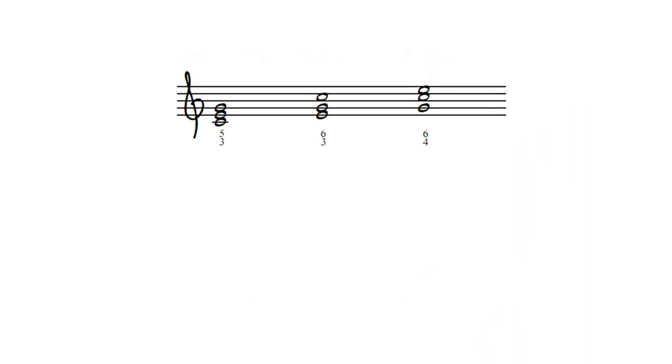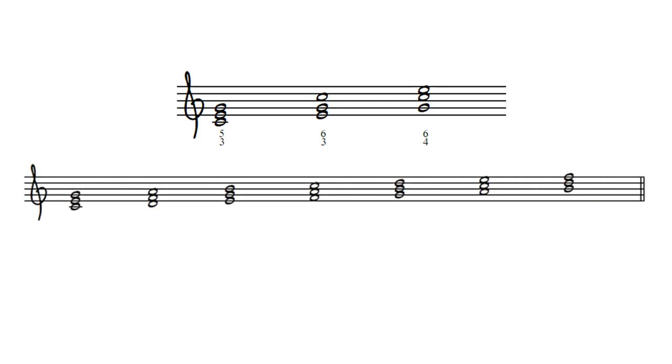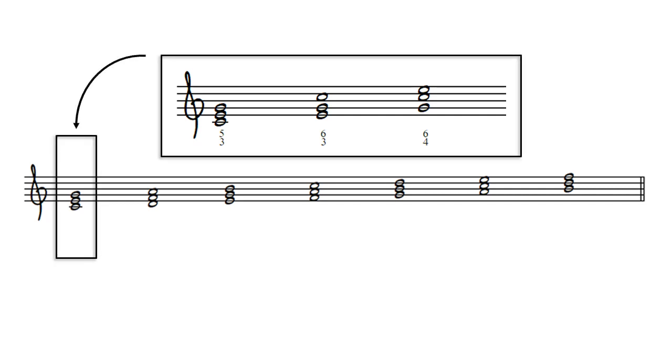In the key of C major, then, there are seven different root position 5-3 triads, one for each scale degree. We just spent some time looking at this chord, but each of the triads in this list could be inverted in exactly the same way to produce 6-3 and 6-4 chords. To label this triad in a way that will distinguish it from the others, we will simply call it by the scale degree of its root. In this case, the root is scale degree 1, so we label the chord with a roman numeral I.